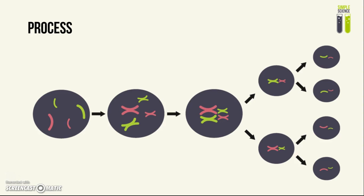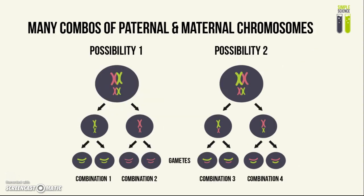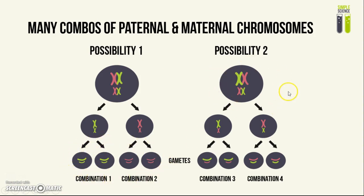There are two ways in which meiosis can produce variation. The first way is through chromosome alignment. When the chromosomes are being lined up, there are many different ways they can line up — these are just two examples. If they're lined up one way, the resulting gametes will end up with a particular set of chromosomes, whereas if they're lined up the other way, the resulting gametes will be different. This is quite visual, so feel free to pause and look at the diagram in more detail.